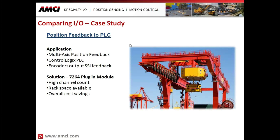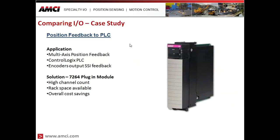The first case study is a position feedback application. A gantry has both X and Y axes along with a Z axis to monitor — four sensors total feeding back to a ControlLogix PLC. The encoders output SSI feedback. An SSI interface module that plugs directly into the ControlLogix was selected because it provides a high channel count, interfacing all four sensors into one plug-in card. With rack space available and the high-density module, it provides overall cost savings compared to using four individual SSI interfaces on a distributed point IO solution.